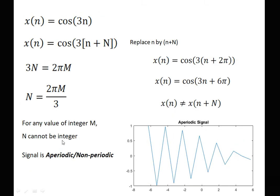Next: x(n) = cos(3n). We replace n by n + N, and equate 3N = 2πm, giving N = 2πm/3. For any integer value of m, N cannot be an integer because π is an irrational number. Therefore the signal is aperiodic or non-periodic in nature.